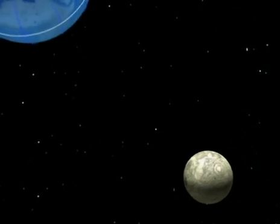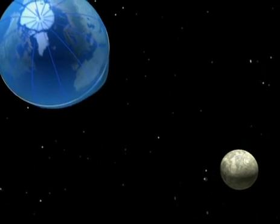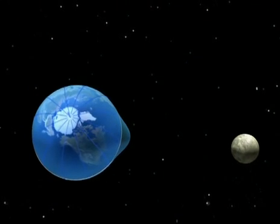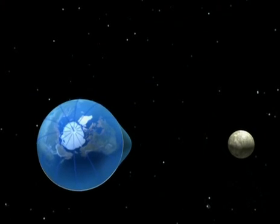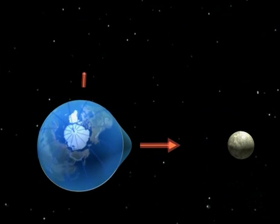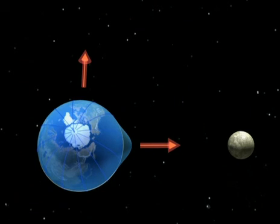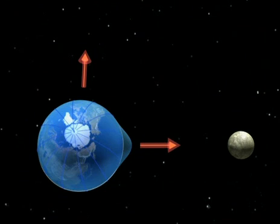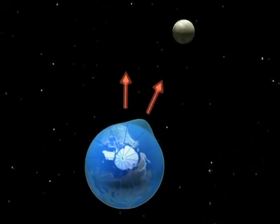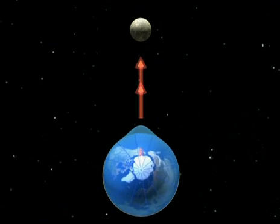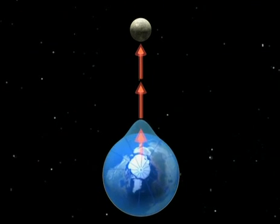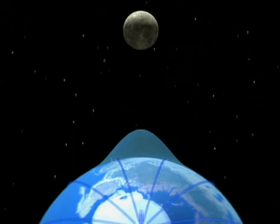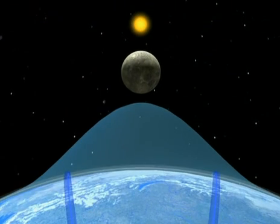This equinox period brings us the spring tides. The pull of the moon attracts the water in the oceans. If it's a half moon, it pulls in this direction, while the sun pulls in another direction. These two diverging pulls cause only small tides. However, if the moon lines up with the sun, they pull together and give us very high tides. On the day of the equinox, directly over the equator, the sun adds its pull to the Earth's centrifugal force, and that triggers our equinox spring tides.